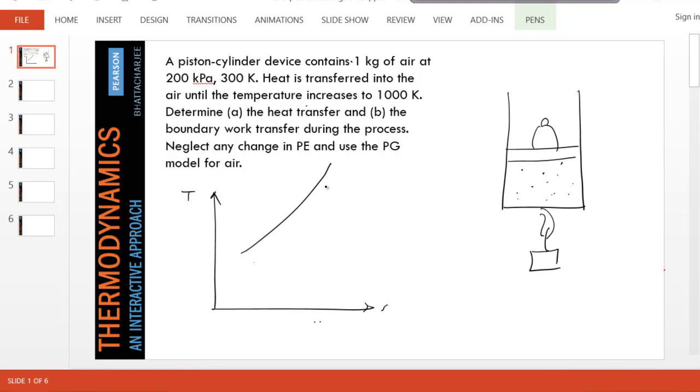So this is a—let's say this is a pressure equals 200 kPa line. 100 kPa will be lower than that. So the process will be somewhat like that, going from state one to state two. Temperature increases.